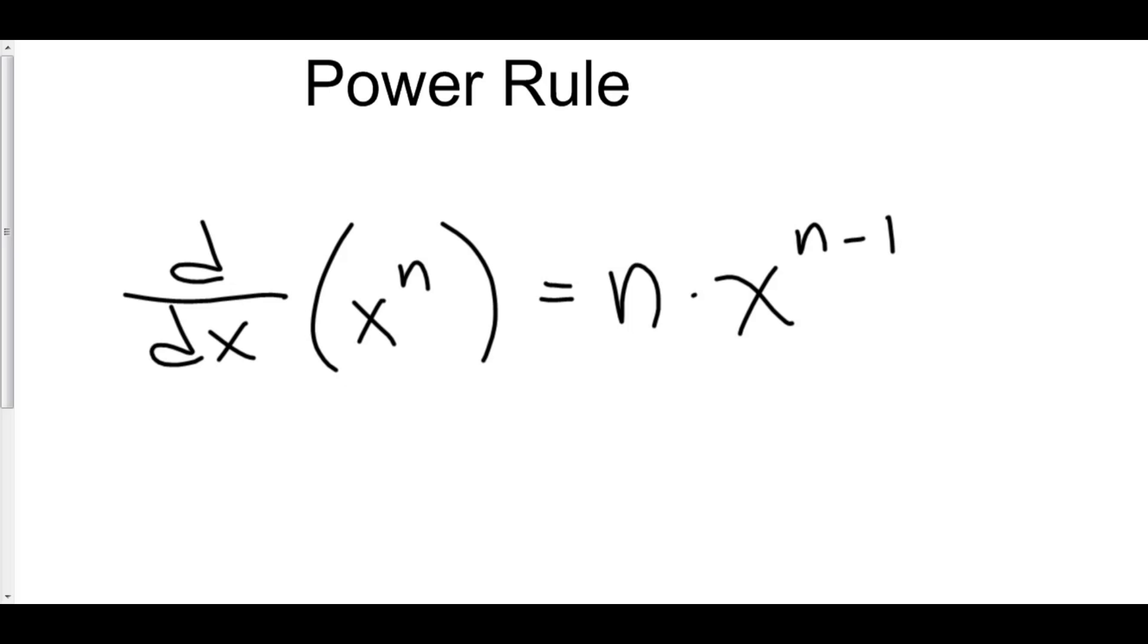The Power Rule is extremely important in taking the derivatives of polynomials. It says that the derivative of x to the n is equal to n times x to the n minus 1.